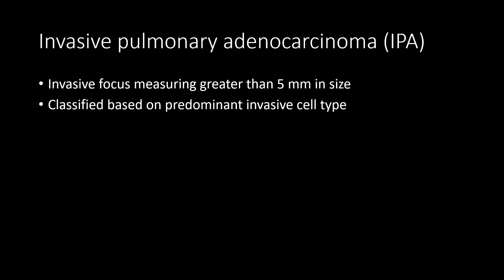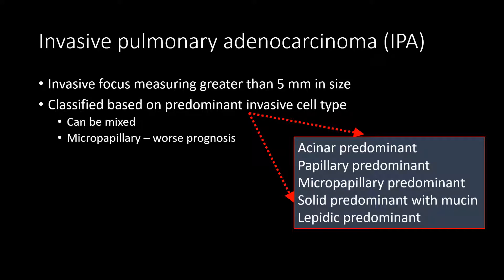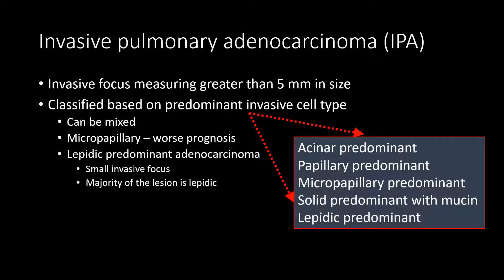The only difference between invasive and minimally invasive adenocarcinoma is the size of the invasive focus. Pathologists use greater than 5 millimeters of invasive component to differentiate the two. For invasive lesions, the invasive components are characterized as acinar, papillary, micropapillary, solid, or lepidic — and can be mixed. Micropapillary predominant cell type carries the worst prognosis with greater risk for metastatic disease. Lepidic predominant adenocarcinoma refers to lesions where the majority is lepidic with a smaller invasive component, though the invasive component still exceeds 5 millimeters.